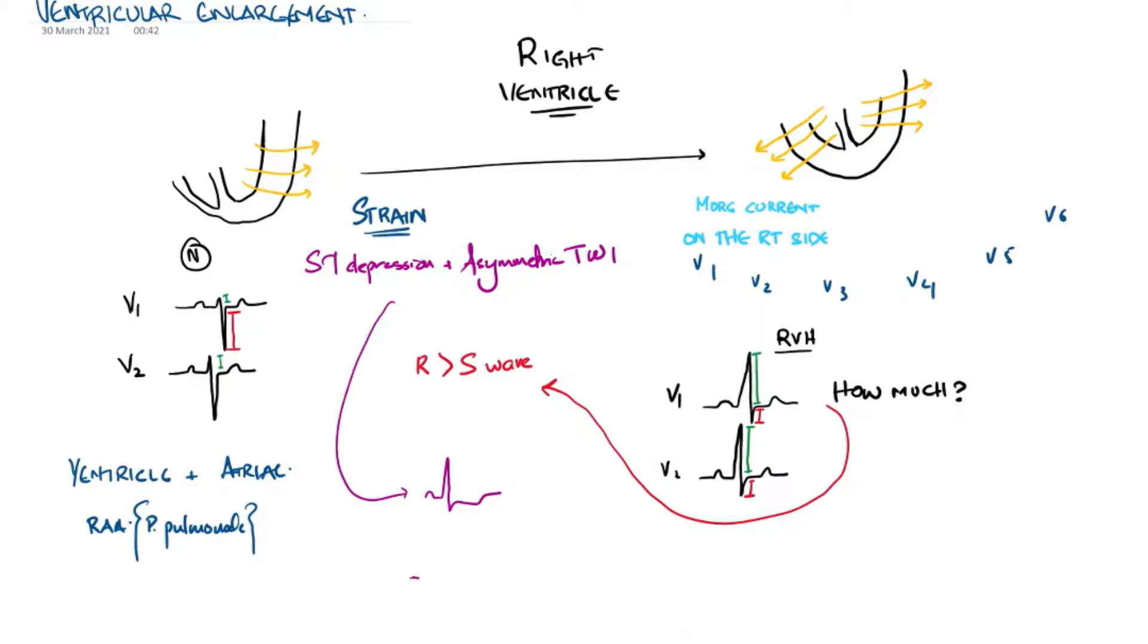Now this is strain, but there are also variants of strain. So you've got ST depression, asymmetric T wave inversion, and then again, pretty much just a flat STT segment. So these are known as either strain patterns or you can call them strain equivalent. And these basically increase the sensitivity of diagnosing RVH on an ECG.